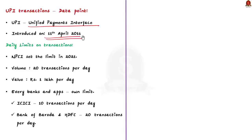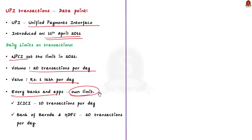The National Payments Corporation of India in 2021 set the limit. Users can make up to 20 transactions a day with an amount of up to Rs. 1 lakh per day. However, every bank and app has their own limits. For example, in ICICI Bank the number of UPI transactions per day is limited to 10, but Bank of Baroda and HDFC allow 20 transactions per day.